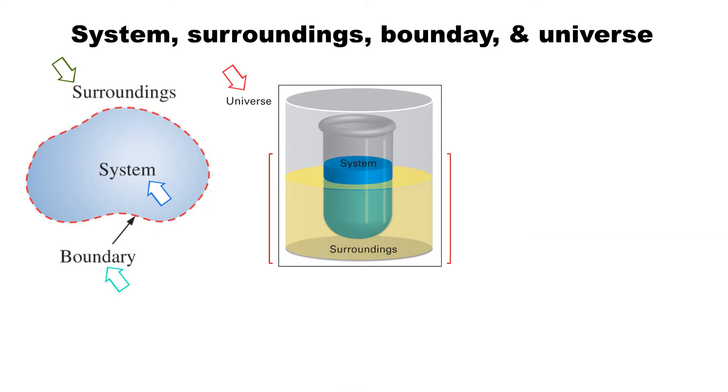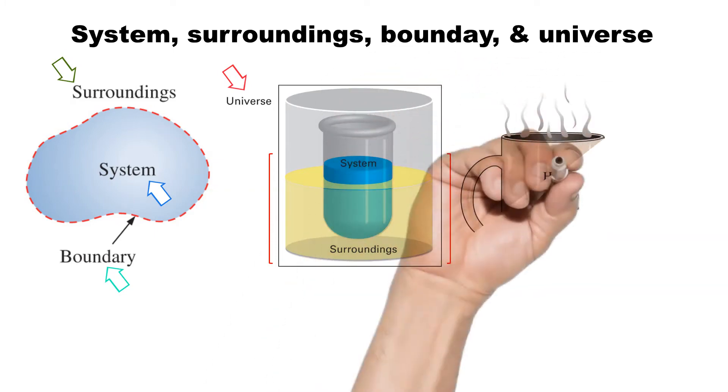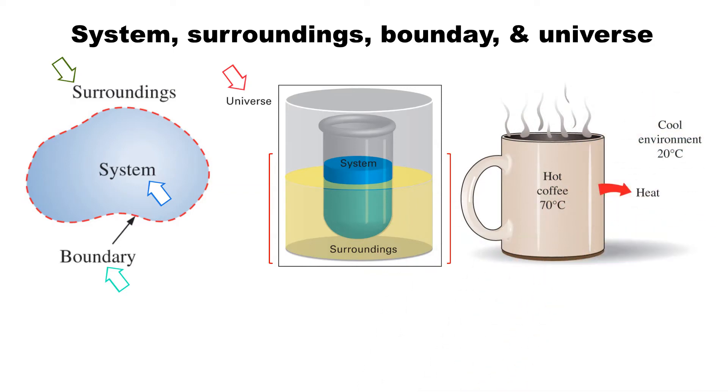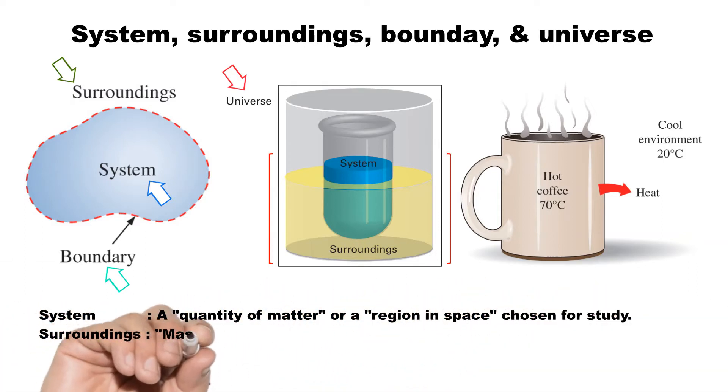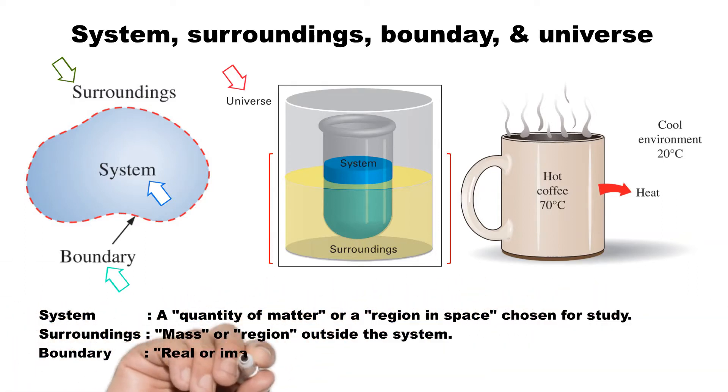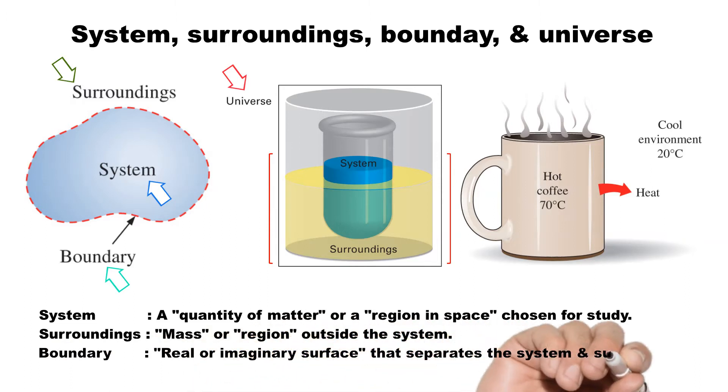To understand these terms, let's consider a coffee cup. If we are interested to study the thermodynamic properties of coffee in the cup, then we can define coffee as a system. Here, the coffee cup is the boundary. In this case, it is a real boundary. The region other than the coffee cup is called the surroundings.